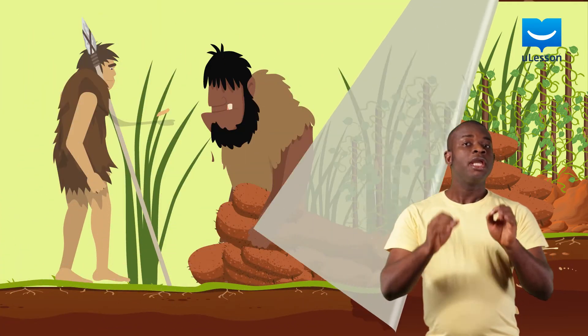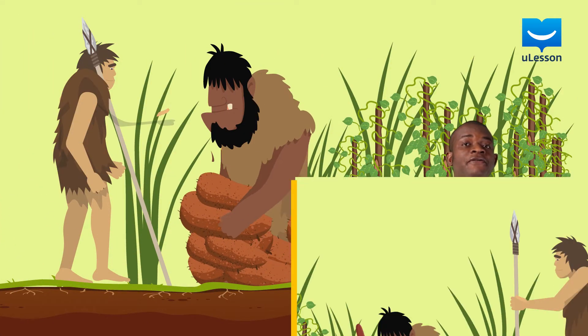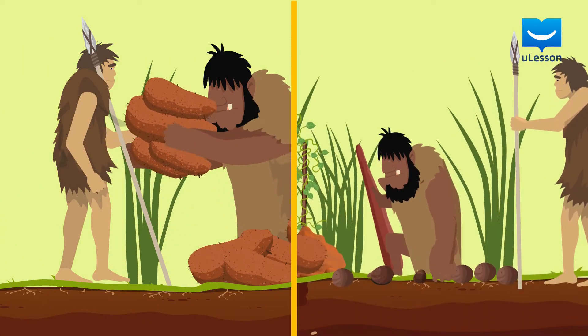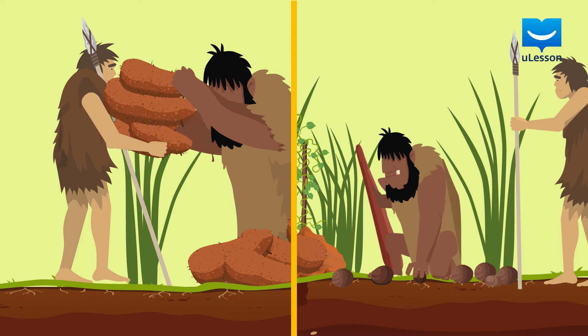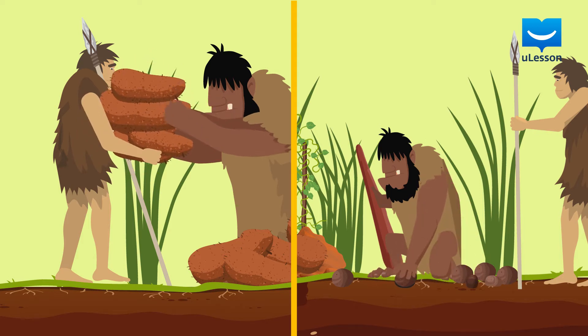So, if he gave 5 tubers of yam to his brother, he would simply remove 5 stones from his collection of stones.